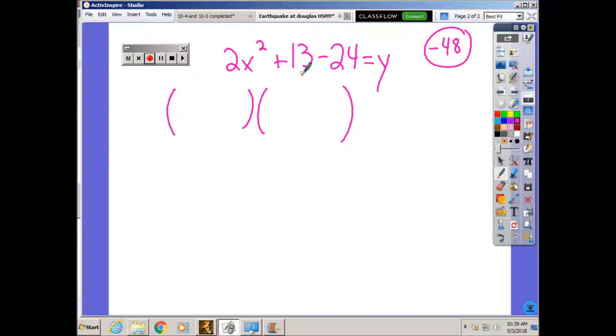So what we found worked was positive 16 and negative 3. Positive 16 and negative 3 multiply to give me negative 48 and they combine 16 minus 3 gives me positive 13.